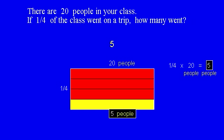Every fraction word problem has a corresponding whole number equivalent except one special case — when you're taking a part of something. For example, there are 20 people in your class. If one-fourth of the class went on a trip, how many went? For these 'part of' problems, it will always be fraction multiplication if three conditions are met: it's a simple fraction (less than one), followed by 'of,' and then a number or something that refers to a number. Here, 'the class' refers to the 20 people, so one-fourth of 20 is five.